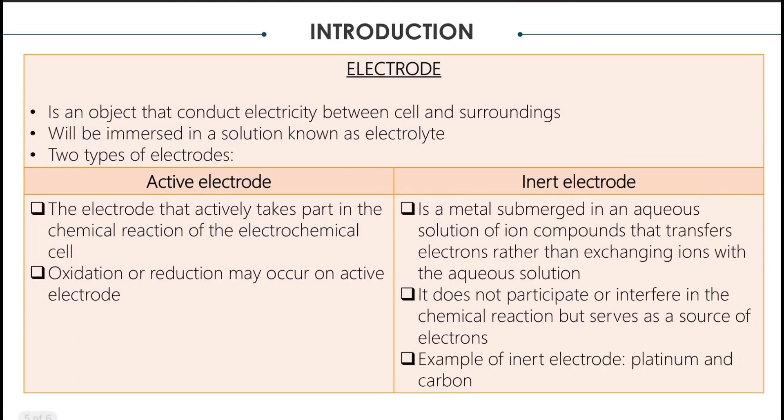Let's take a look at electrodes. An electrode is an object that conducts electricity between a cell and its surroundings. The electrode will be immersed in a solution that we know as electrolyte. There are two types of electrodes: active electrodes and inert electrodes. Active electrode is the electrode that actively takes part in the chemical reaction of the electrochemical cell.